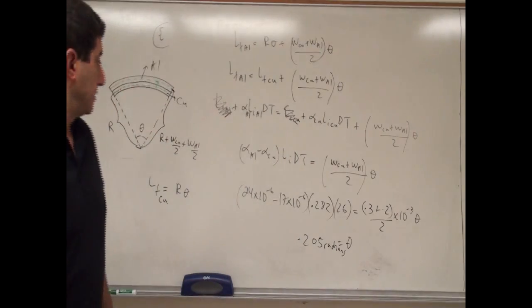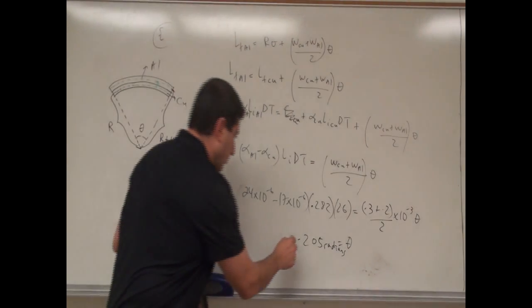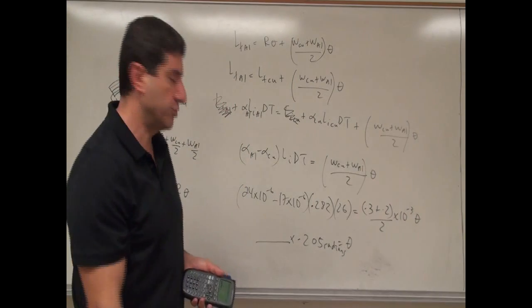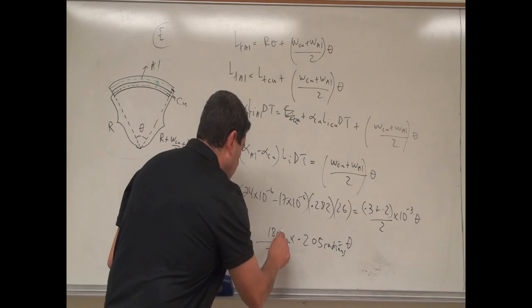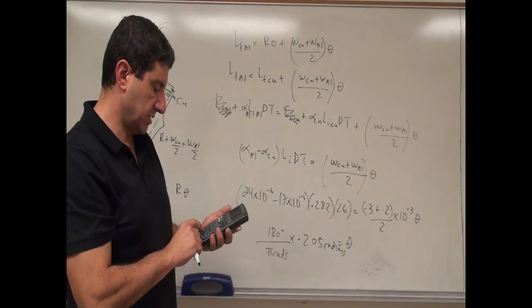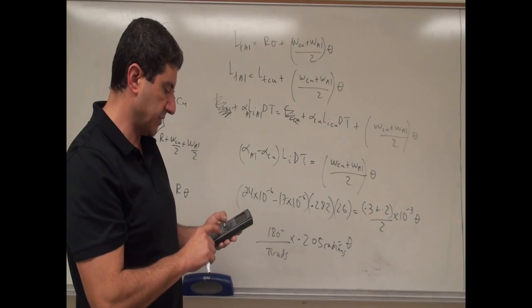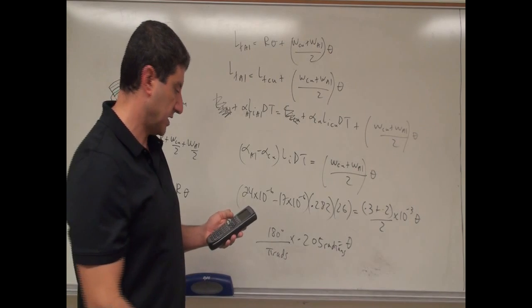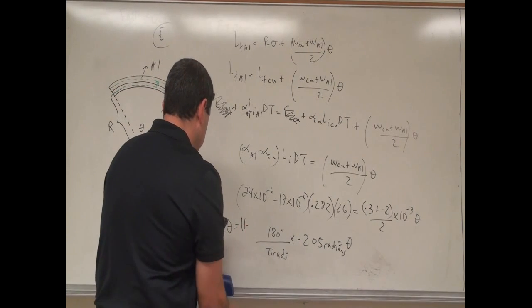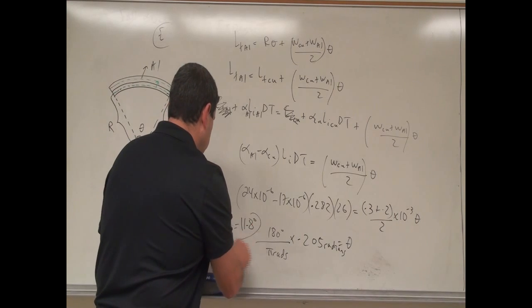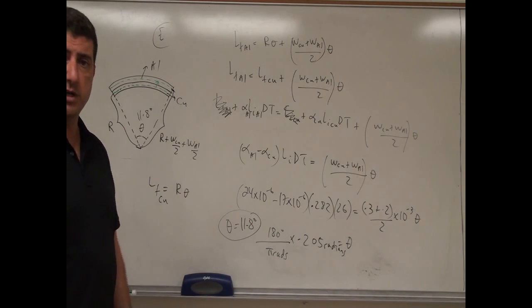That's the subtendent angle made by the strip. And then if I want to change that to degrees, I say pi rads is equal to 180 degrees. So multiply this number by 180 divided by pi, and I get 11.8 degrees. So that's a pretty substantial angle.